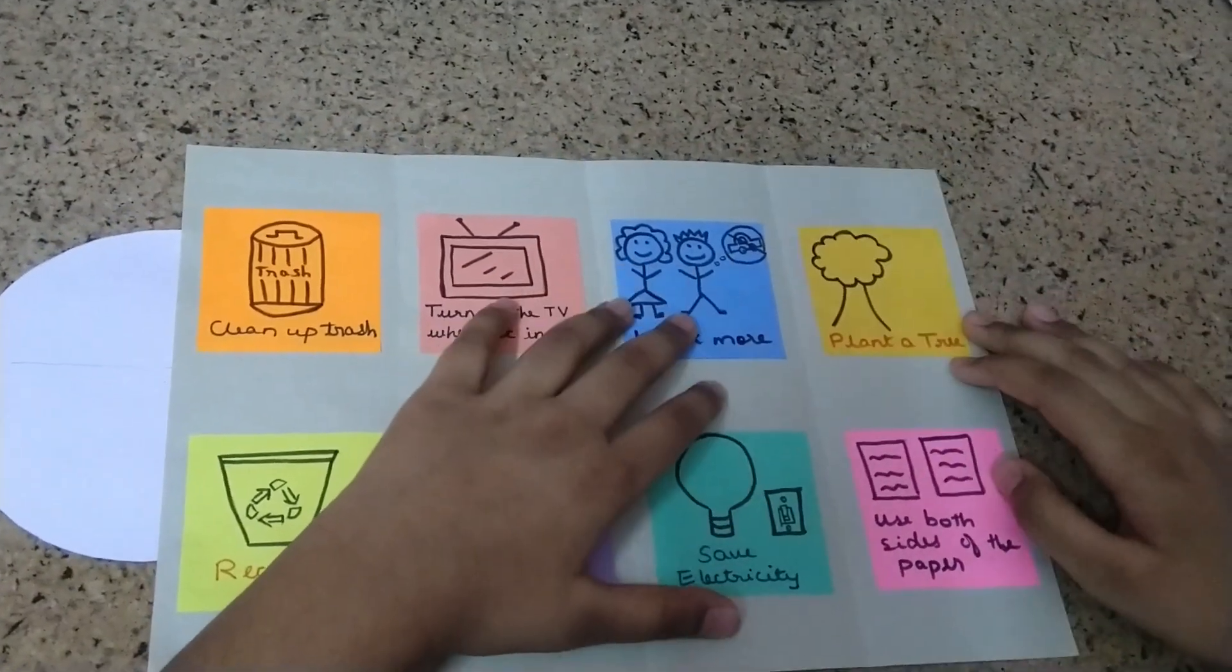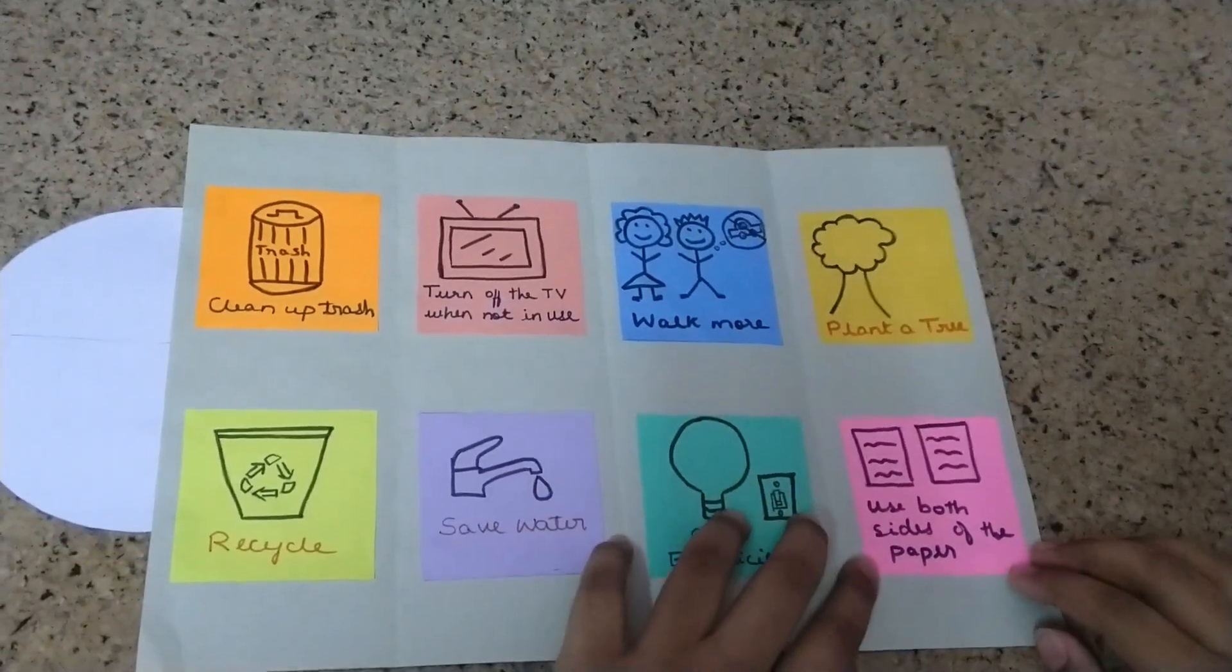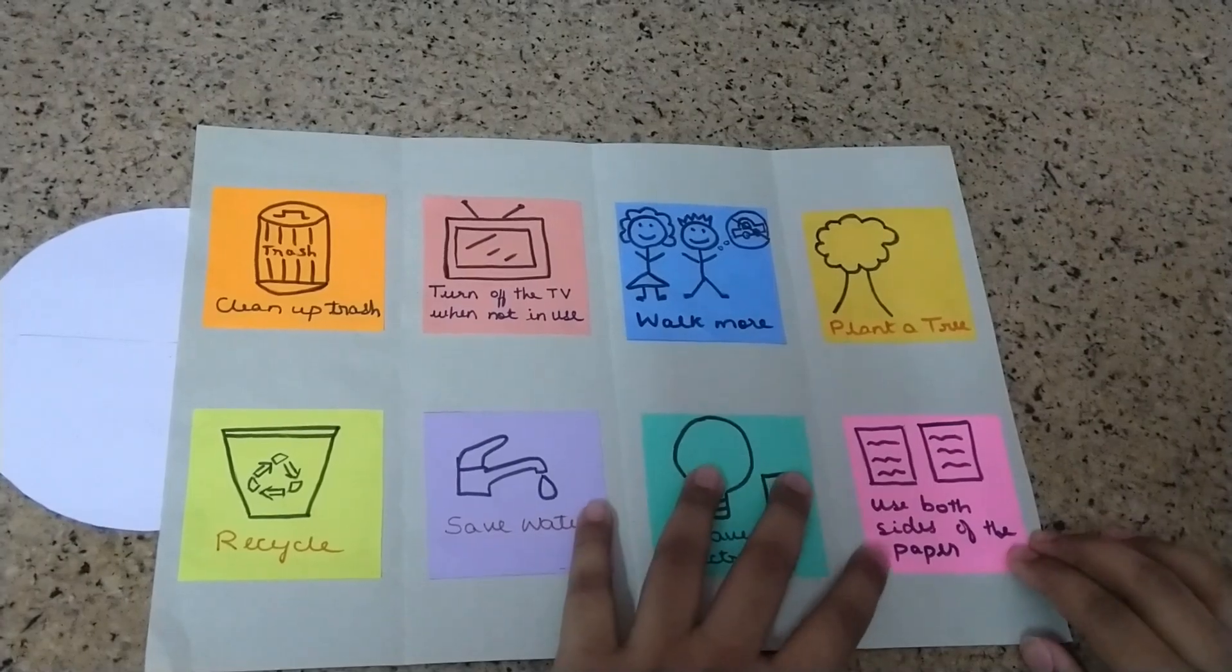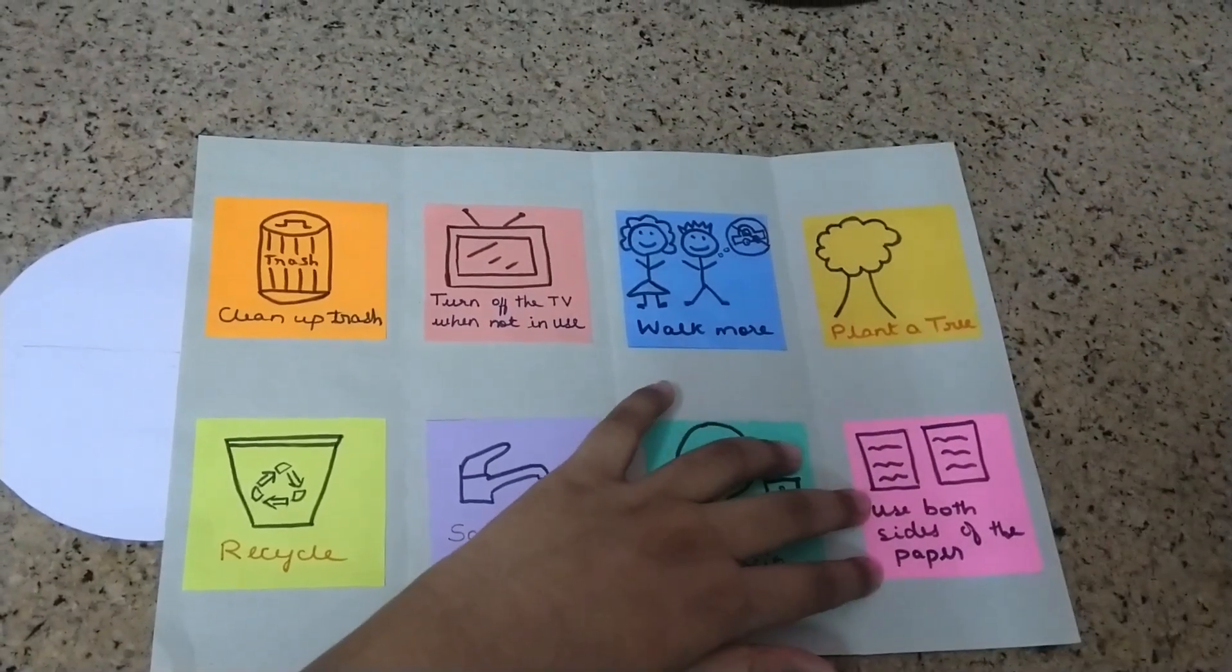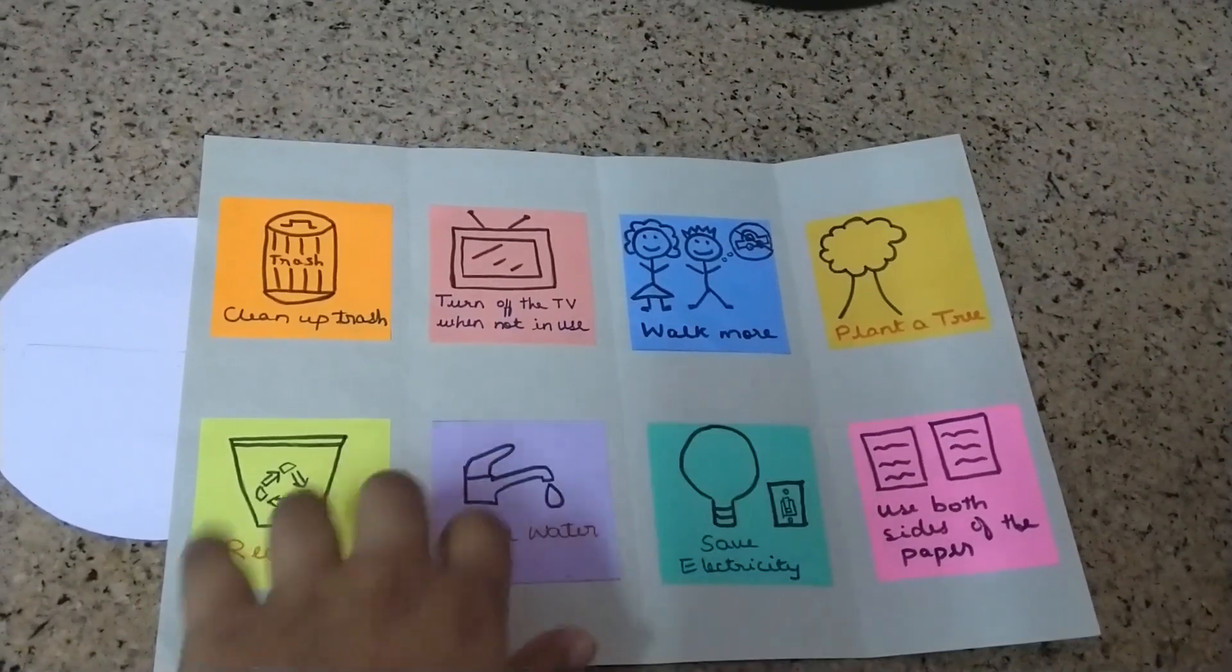The seventh point is plant many trees, and the last point is use both sides of the paper.